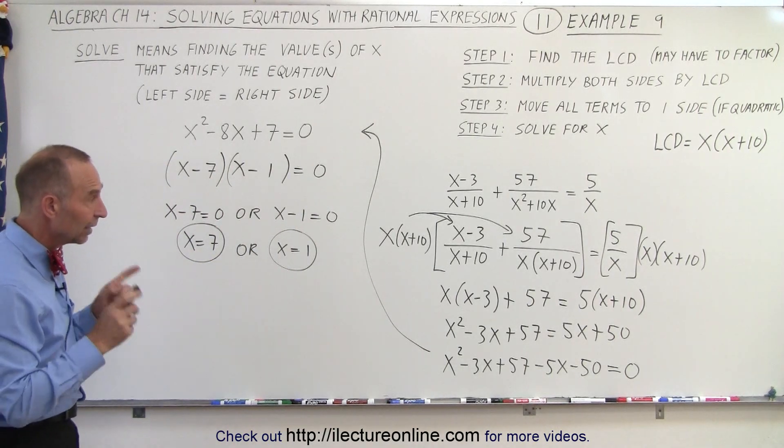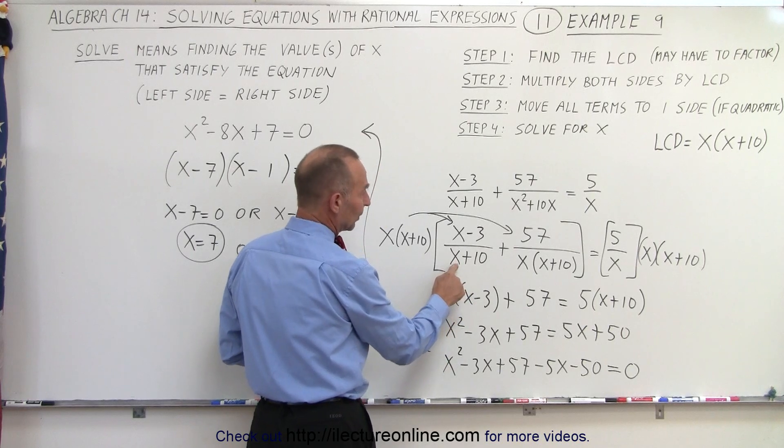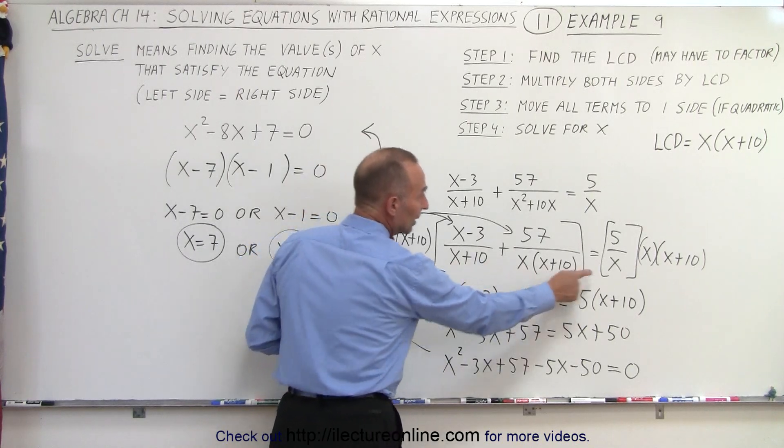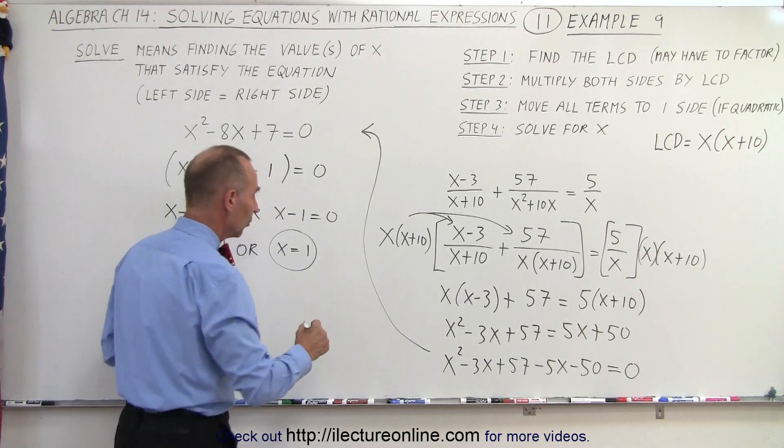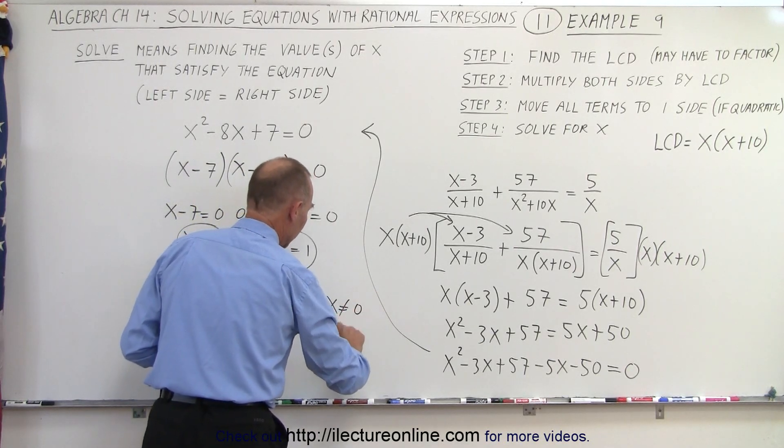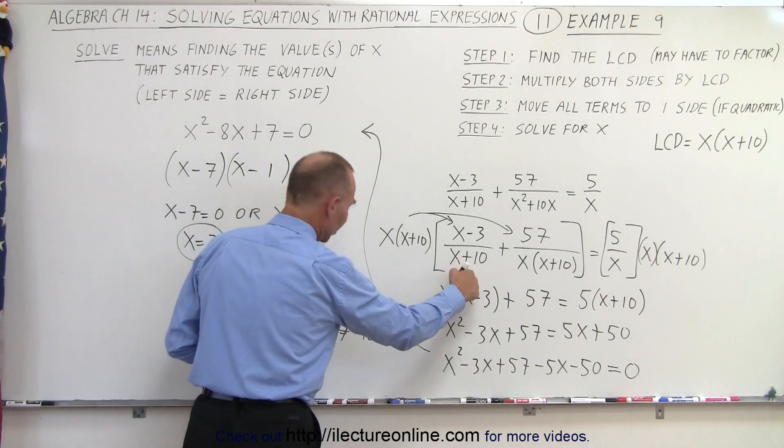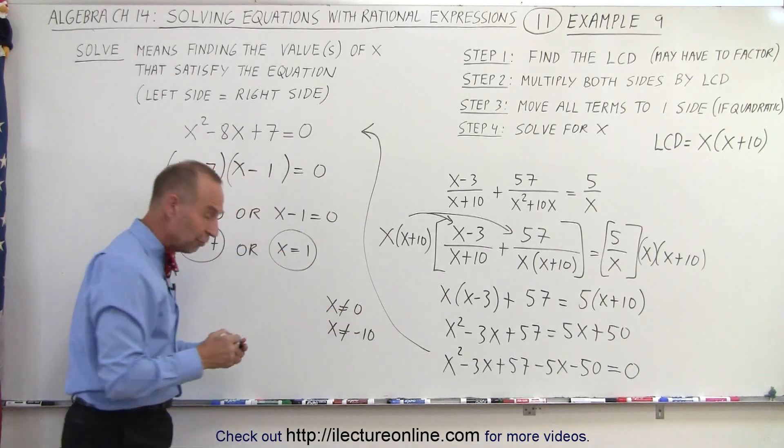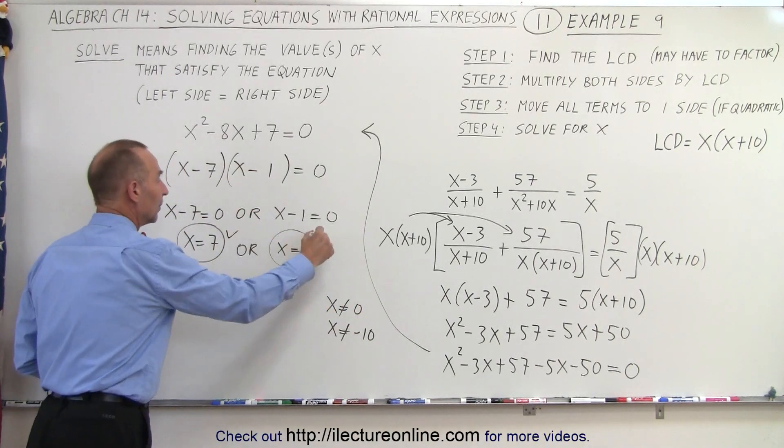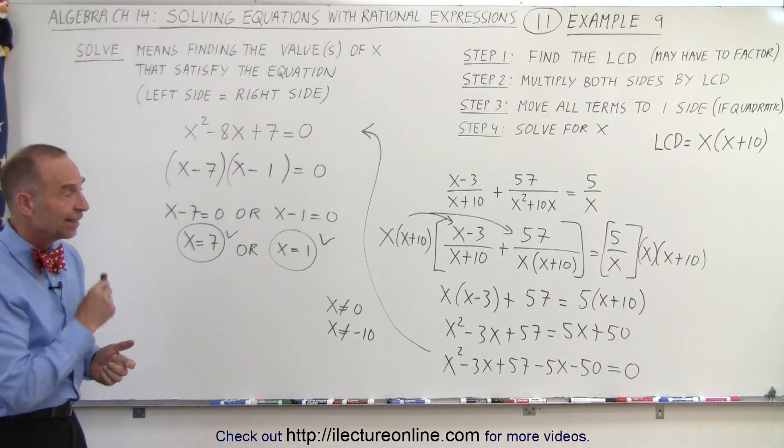But before we claim victory, let's go over here and look at all our denominators. Notice that x cannot equal negative 10 and x cannot equal 0 because that would cause us to have zero denominators. So we can say that x should not equal 0 and x should not equal negative 10 because negative 10 plus 10 gives us 0. But neither one of our solutions are one of these two values. So we can then claim that both of these satisfy the equation. And that is how it's done.